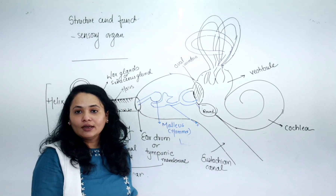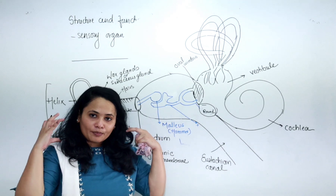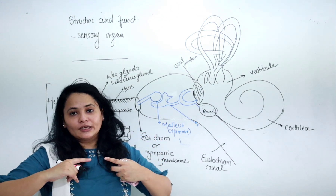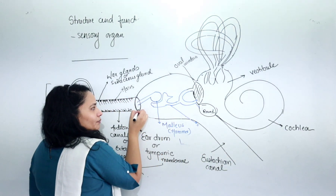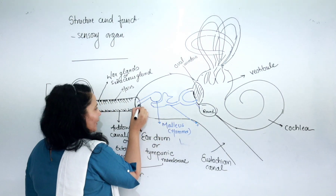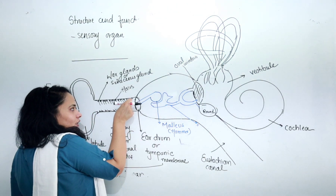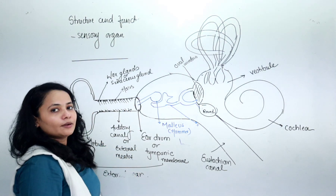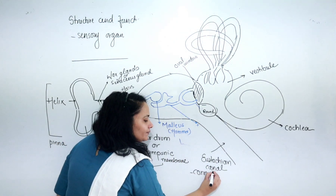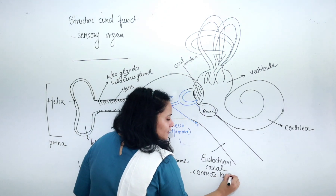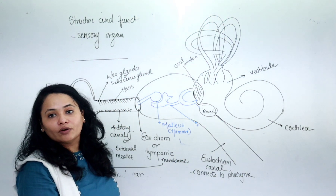What is the function of the Eustachian canal? The Eustachian canal connects the middle ear to the pharynx and maintains air pressure equal on both sides of the tympanic membrane. Air enters from the pharynx so that there is no damage to the tympanic membrane or eardrum.